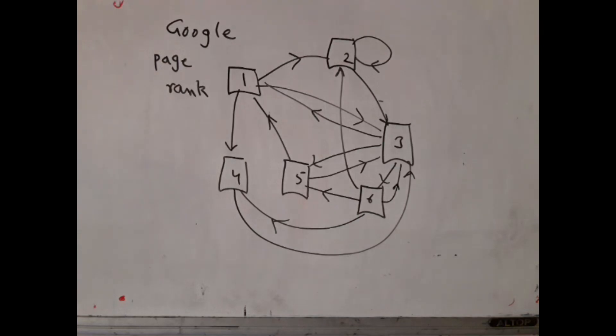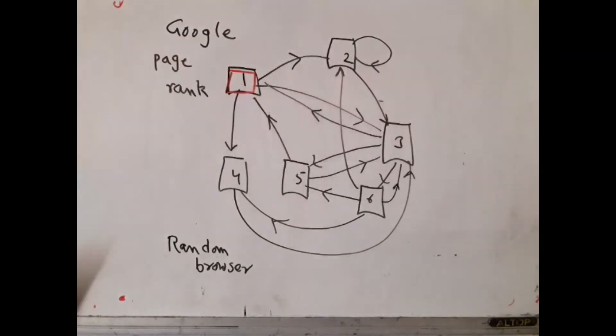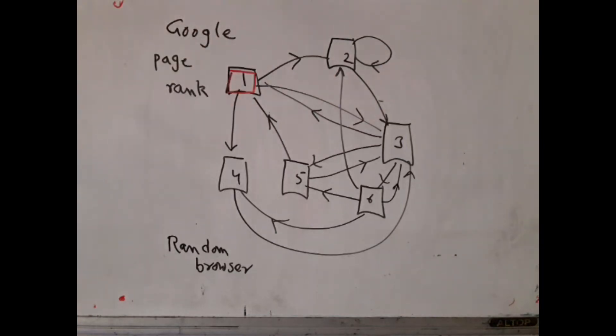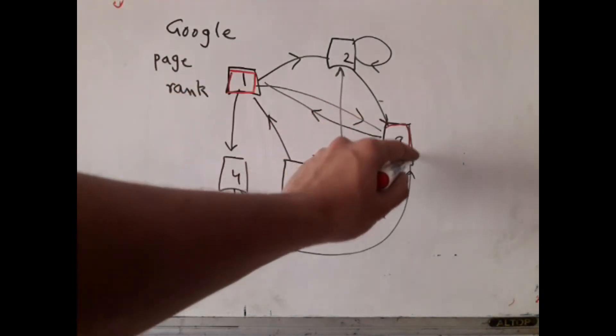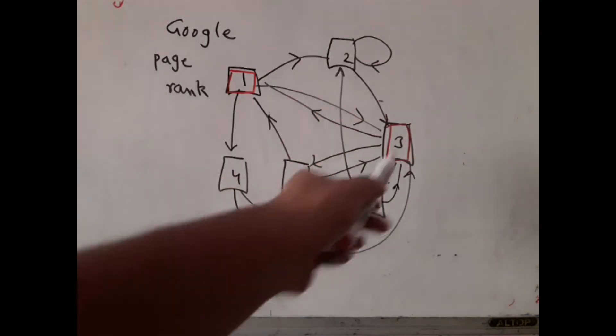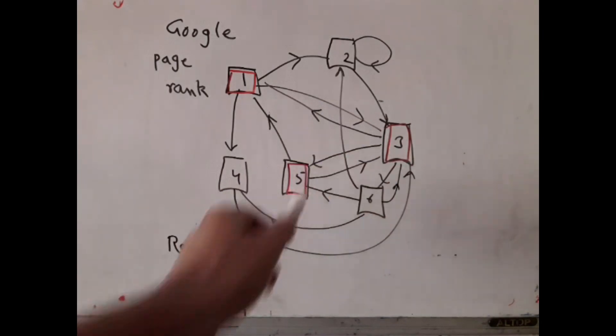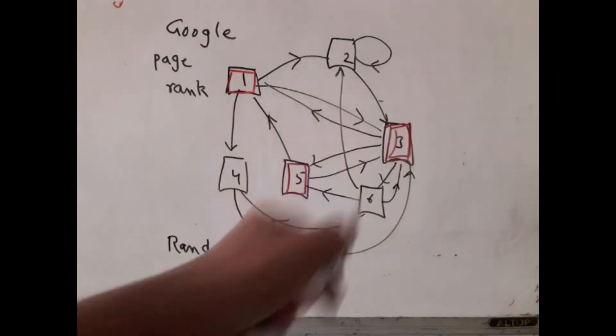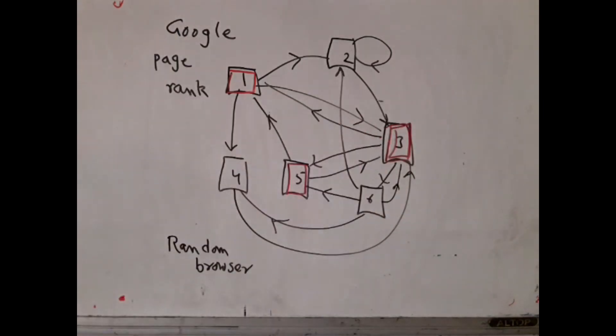So it is starting from, say, 1. So you are now at 1, and because this fellow is a random browser, he just takes up all the outgoing links and picks any one of them at random and clicks on it. Suppose he takes this and comes to 3. Now, again here, he will pick up any one of the random outgoing links. He possibly picks up these and comes to 5. And then he picks up one of the random links. Well, suppose he picks this and comes back to 3. And in this way, he goes on and on and on.